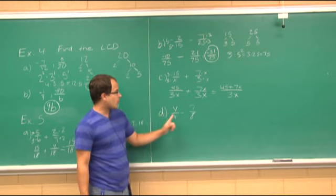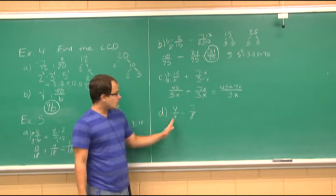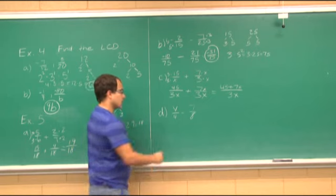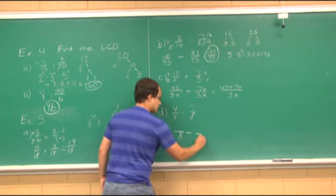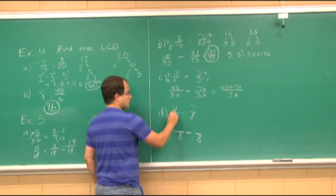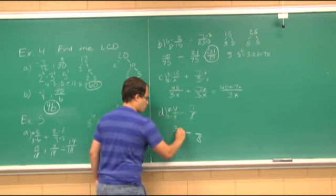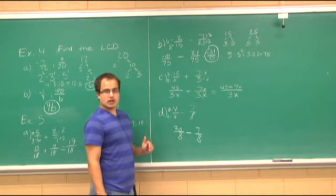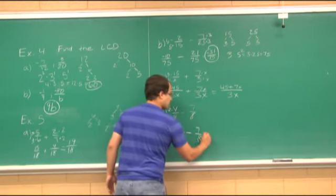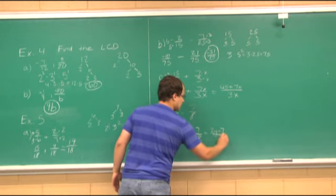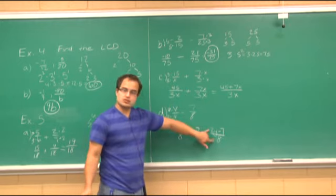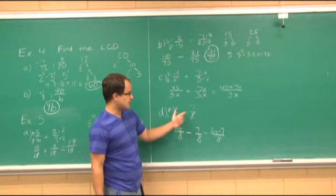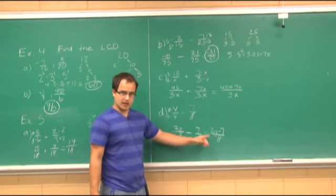Now part d: y over four minus seven over eight. Notice that four goes into eight — when that happens, your LCD is the larger number, so my LCD is eight. Four times two is eight, so I multiply y by two to get 2y. Nothing changed for the seven. When I combine the numerators, they aren't like terms, so I'm left with 2y minus seven over eight. I cannot reduce the two and the eight because this is subtraction in the numerator, not multiplication. So y/4 minus 7/8 equals (2y − 7)/8.